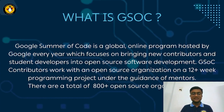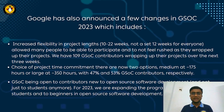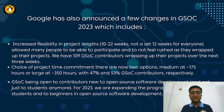However, there are some changes in GSOC guidelines this year. Let us go through them thoroughly so that you guys are more informed about which projects to pursue in the upcoming GSOC. Increased flexibility in project lengths — 10 to 22 weeks — not a set 12 weeks for everyone. Last year it was a set 12 weeks for every contributor, so increased flexibility allowed many people to participate and not feel rushed as they wrapped up their projects.